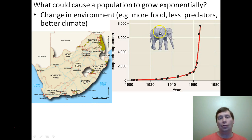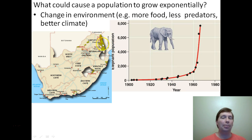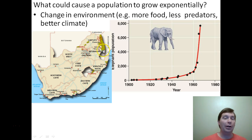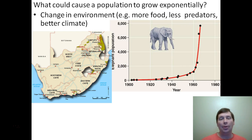What made those slowly-reproducing elephants grow exponentially? If you change the environment and make it more beneficial, a population can grow exponentially — by giving them more food, fewer predators, or a better climate. In South Africa, Kruger National Park was established in the 1940s to protect elephants from poachers who were killing them for ivory. The park is patrolled by the military — if they find a poacher, they shoot them on the spot. As a result, poaching went way down and the elephant population grew really quickly.